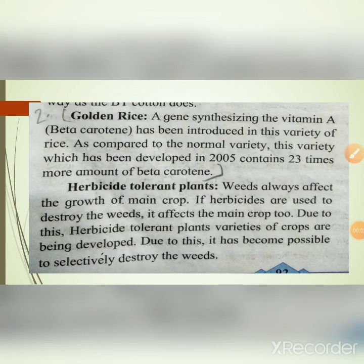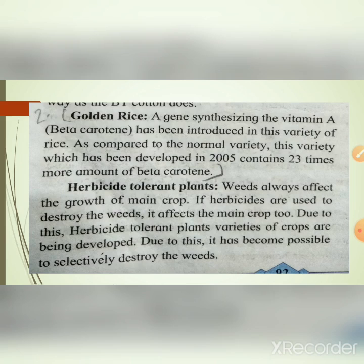Golden Rice: a gene synthesizing vitamin A (beta-carotene) has been introduced in this variety of rice. Compared to the normal variety, this variety, developed in 2005, contained 23 times more amount of beta-carotene. Herbicide-tolerant plants: weeds always affect the growth of the main crop, and if herbicides are used to destroy weeds, it affects the main crop too.